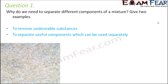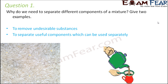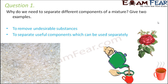The second need is to separate useful components which can be used separately. For example, why do we separate the tea leaves from the liquid tea? That's because the tea leaves can be separately used as a fertilizer for plants, and the liquid tea can be used for consumption. So both components have their own benefits separately, and that's why we separate them.